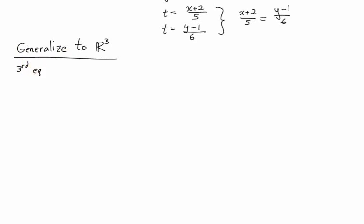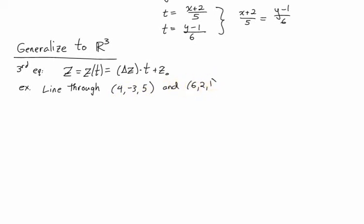The only difference is, in parametric form, you have a third equation. So for the z-coordinate, think of z as a function of t, and similar to before, z is equal to the change in z times t plus z naught, the z-coordinate of your initial point. So let's do an example, it'll make the definition a little bit more clear. Let's say we want to determine the equation of a line through two points, the point 4, negative 3, 5, and the point 6, 2, 1.